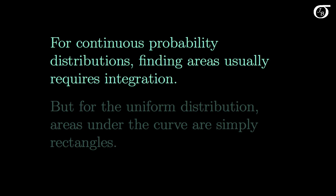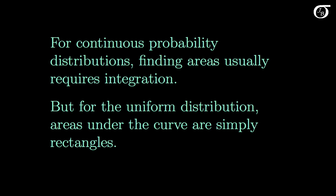For continuous probability distributions, finding areas under the curve usually requires integration. But for the uniform distribution, areas under the curve are simply rectangles. So we can find those using simple areas of rectangles. We could use integration if we so desired, but we don't have to.